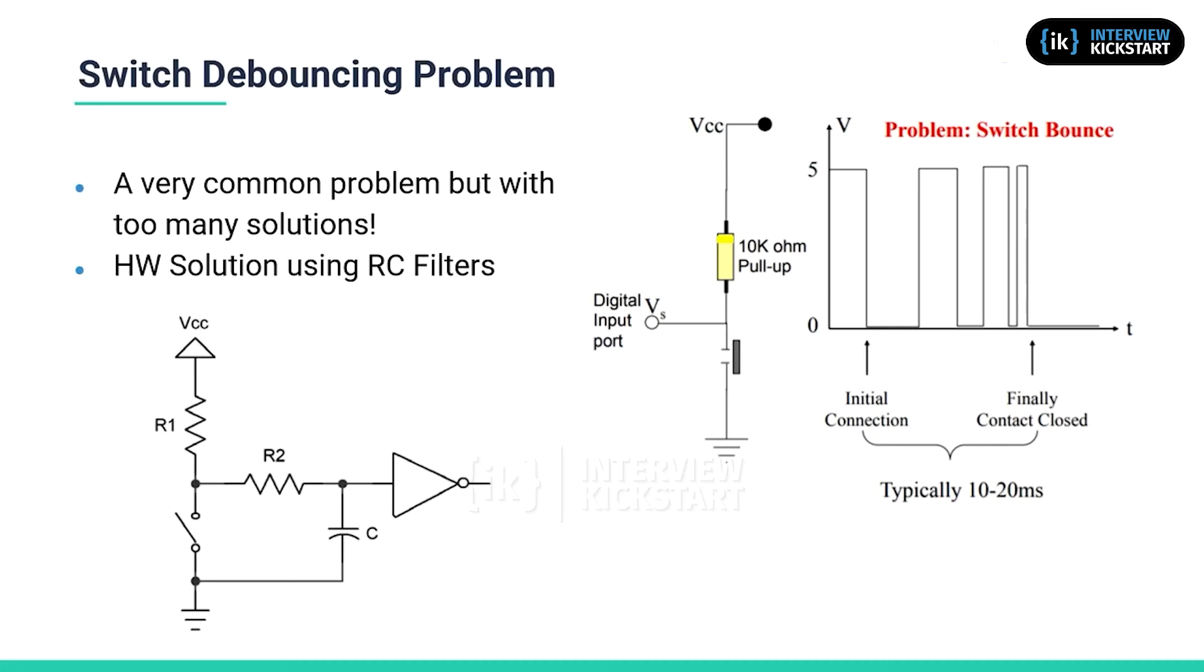Unlike the RC filter solution, the software solution must work in the discrete digital domain. The RC filter is an analog domain solution, whereas software can only deal with digital data.